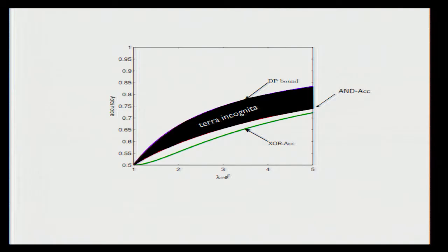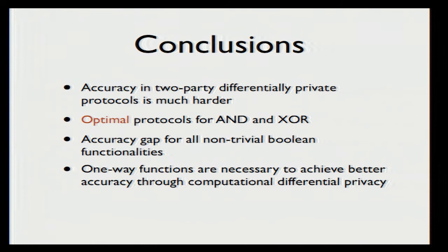To conclude, we have shown that accuracy in the two-party setting is a more complex object. We show optimal protocols for AND and XOR, and we have shown that there is an accuracy gap for every non-trivial Boolean function. In particular, we give a technique which can be used to analyze specific Boolean functions to get sharper bounds. We then show that one-way functions are necessary if you want to go beyond these accuracy barriers. Thanks a lot.